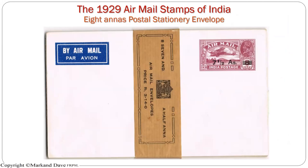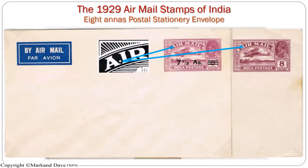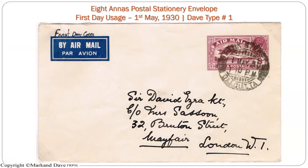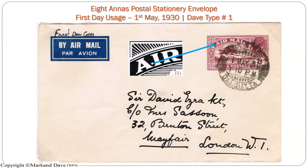In the same design, we also had postal stationery. I was obviously curious to study varieties in the stationery as well. This is the only one variety I could find that is constant — I have seen 50-plus examples. It is a dot between the A and I of the word 'Air.' I am showing two versions: one with eight annas on the right side, and later when the rate was reduced to seven and a half annas, the variety occurs there as well.